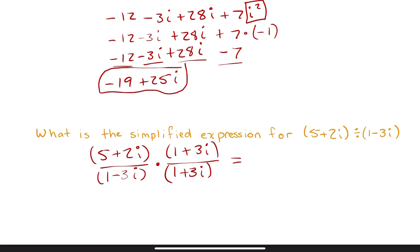Now, bear with me here. We have 5 times 1, which is 5. We have 2i times 1, which is just going to be plus 2i. We have 5 times 3i, which should give us 15i. And then we have 2i times 3i, which is going to give us 6 times i squared, which, of course, is just going to be negative 6.